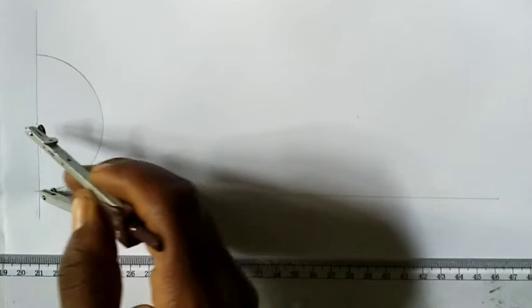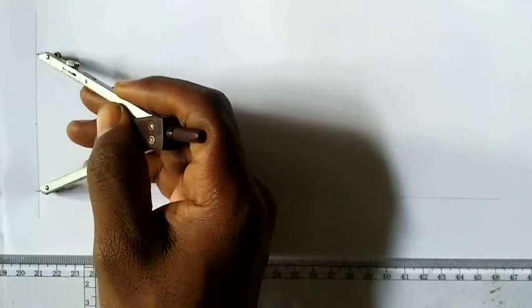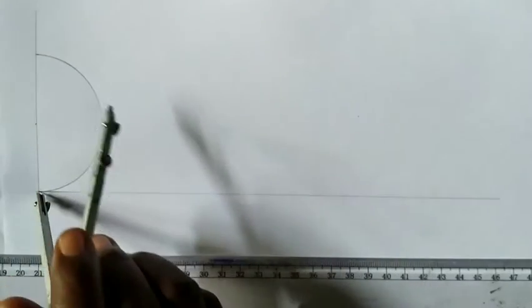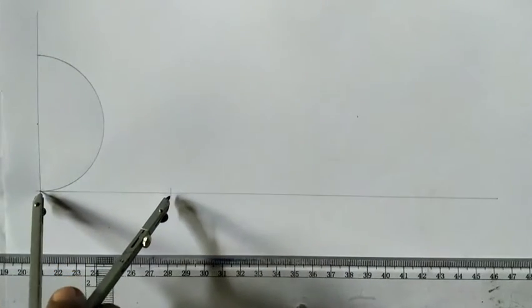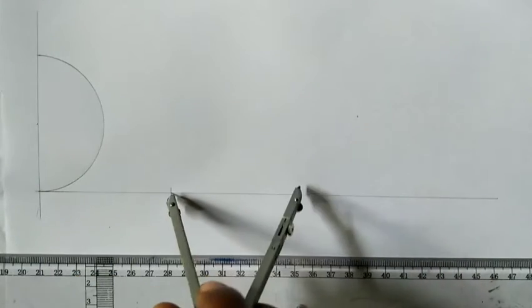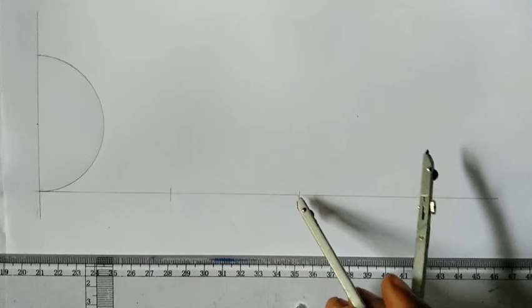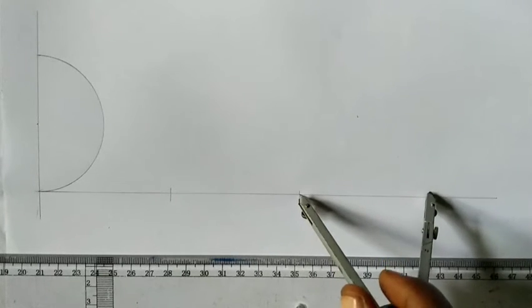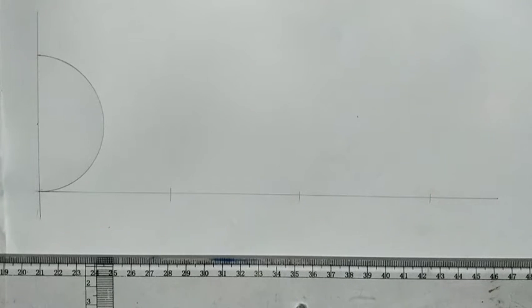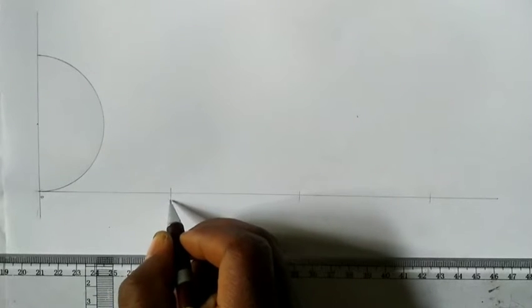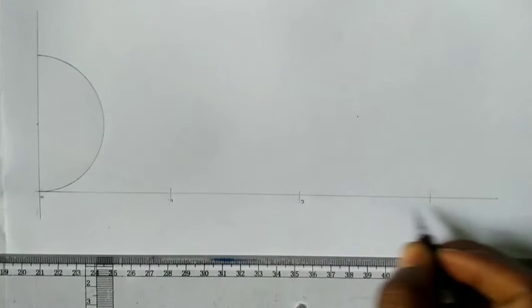And you take the diameter of the circle, which is 70, from here to here. And you mark: this is 1, this is 2, this is 3. So you do it into 3 different places. This will be 0, 1, 2, then 3.